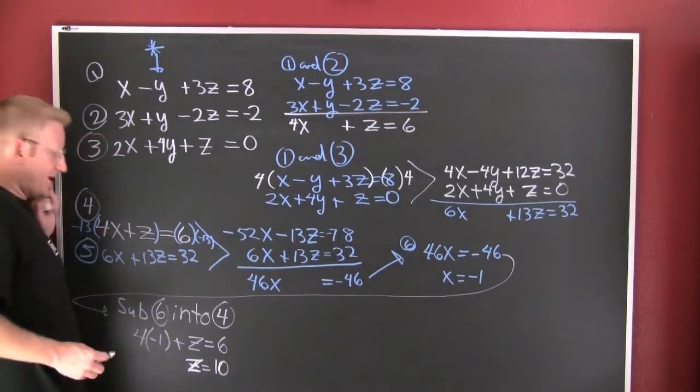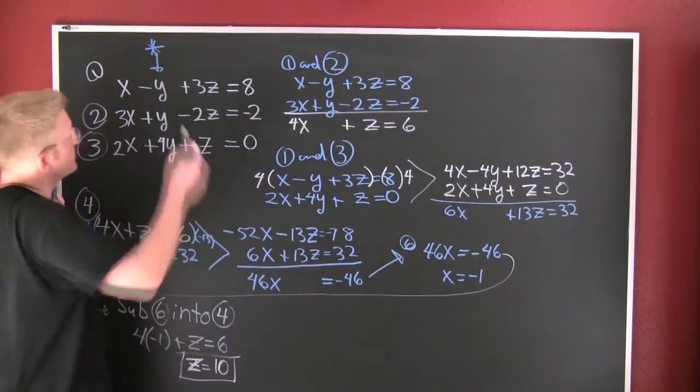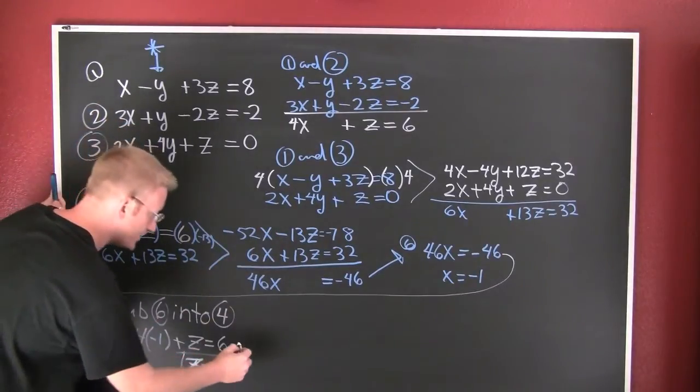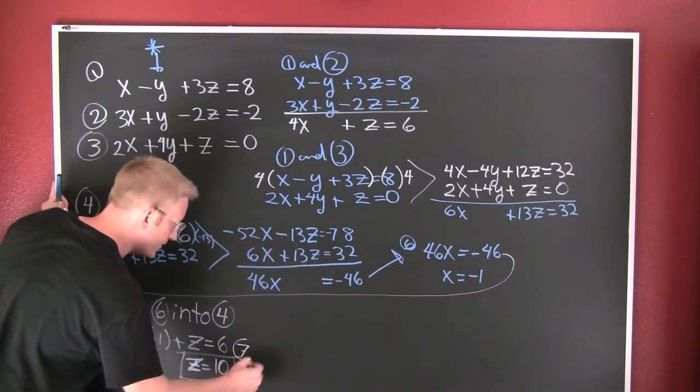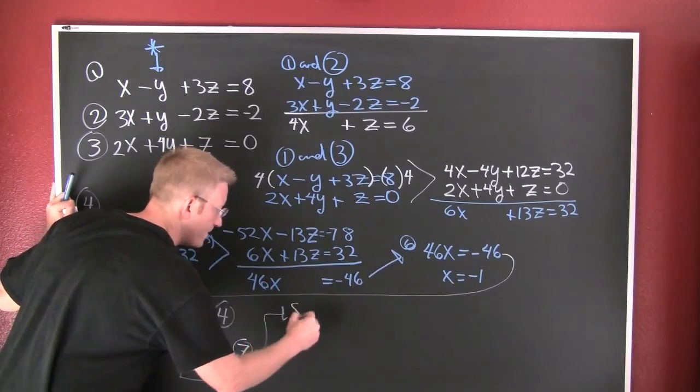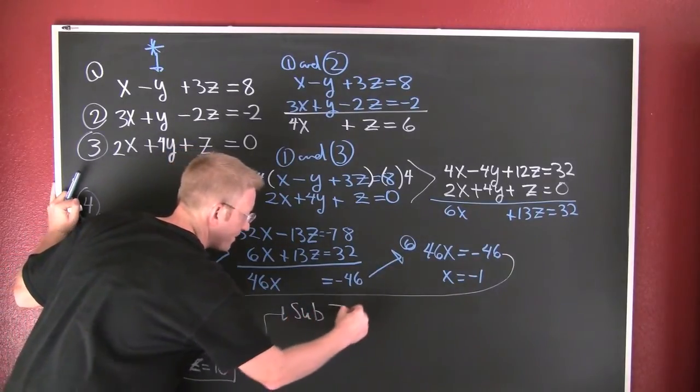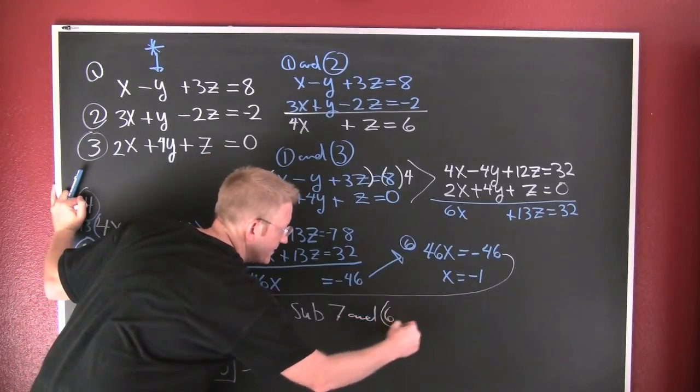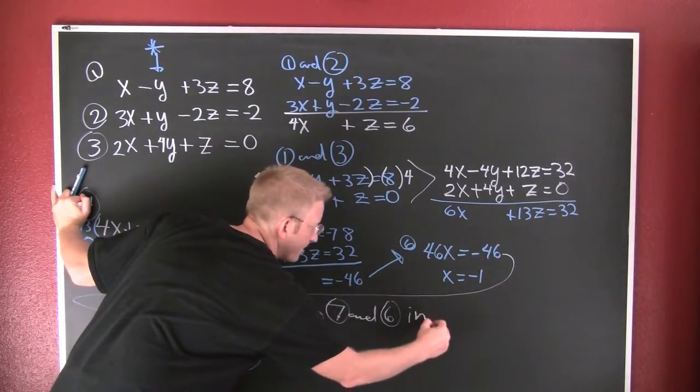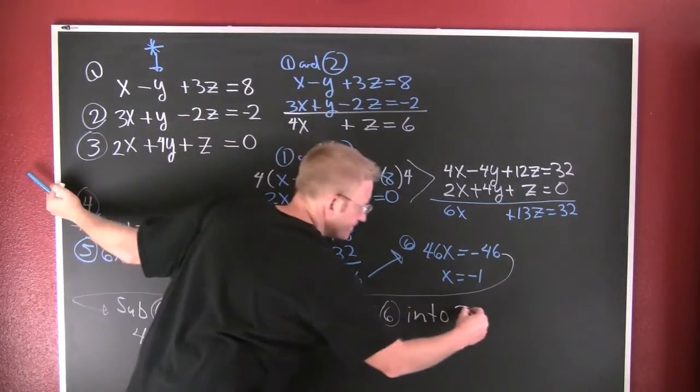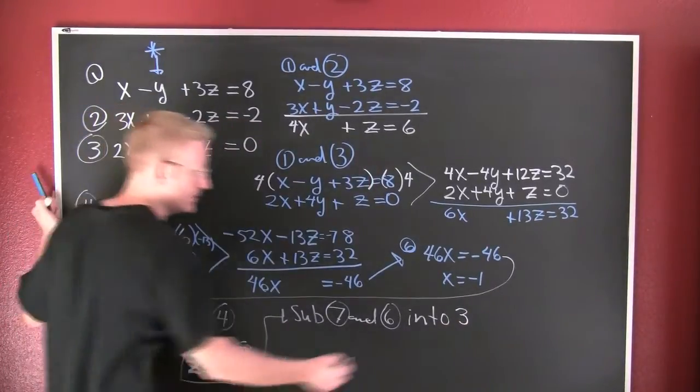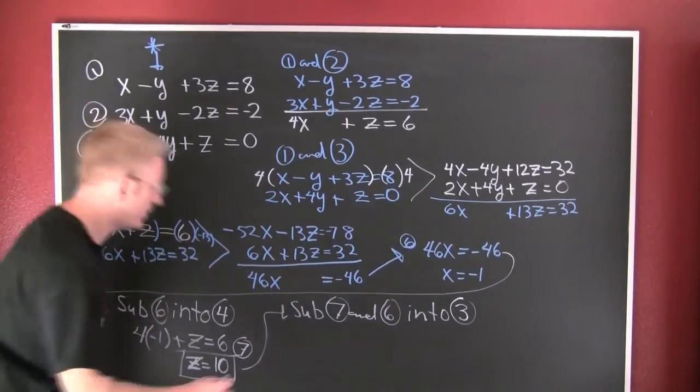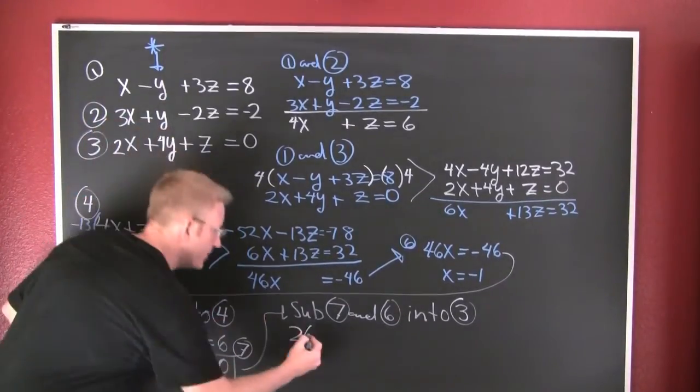Z is 10. So X is minus 1 and Z is 10. I'm gonna take those and I'm gonna sub those. I'll call this one seven. Sub seven and six into three.